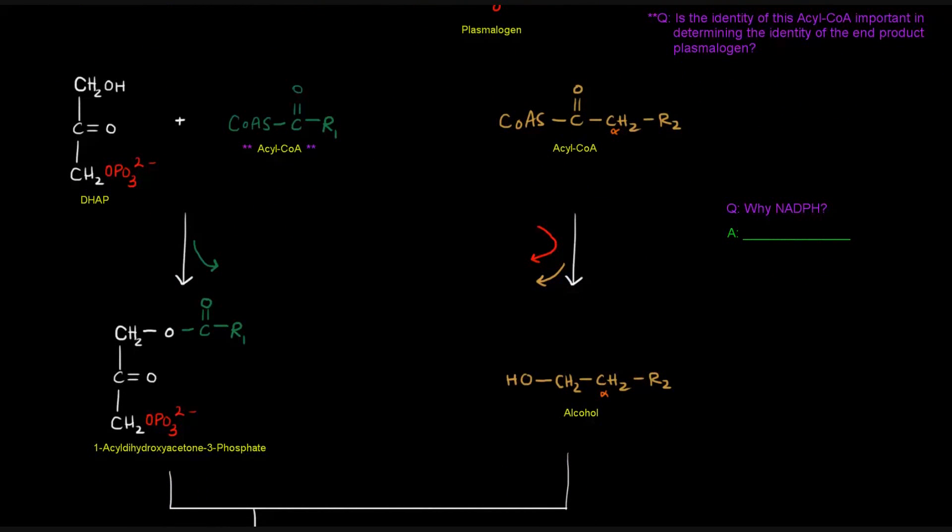The first thing that happens is we're going to have dihydroxyacetone phosphate, which is going to be the glycerol backbone. We take that and join it to an acyl-CoA. This acyl-CoA has asterisks next to it associated with the question: Is the identity of this acyl-CoA important in determining the identity of the end product plasmalogen? We have to go through the pathway and come back to see whether this acyl-CoA was important or not.